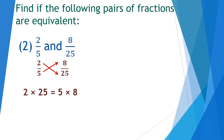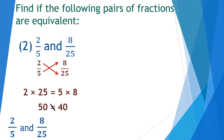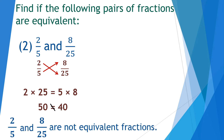Do the multiplication: 25 × 2 = 50 and 5 × 8 = 40. But 50 is not equal to 40. So we can say that 2 upon 5 and 8 upon 25 are not equivalent fractions.